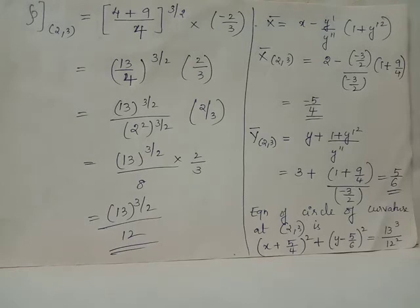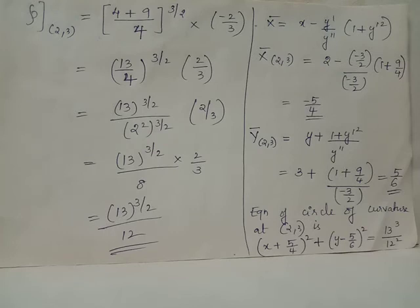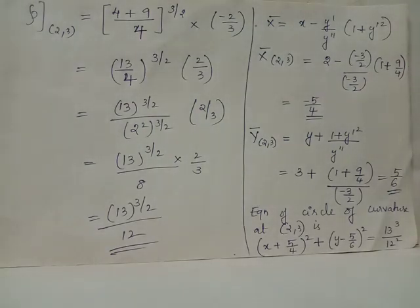The equation of the circle of curvature at point (2,3) is given by (x minus x̄) whole square plus (y minus ȳ) whole square equals rho squared. We substitute x̄ equals negative 5 by 4 and ȳ equals 5 by 6. Rho squared will be (13 raised to 3 by 2) whole squared divided by 12 squared. Since (13 raised to 3 by 2) whole squared becomes 13 cubed, we obtain rho squared as 13 cubed divided by 12 squared. Also, (x minus x̄) becomes (x minus minus 5 by 4), which becomes (x plus 5 by 4). Thus the equation of the circle of curvature at (2,3) is obtained as (x plus 5 by 4) whole square plus (y minus 5 by 6) whole square equals 13 cubed divided by 12 squared.